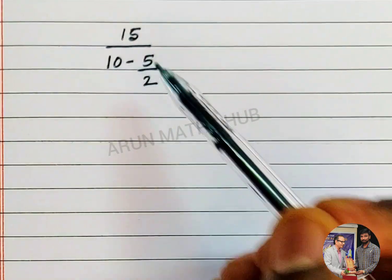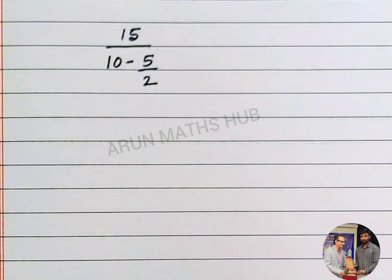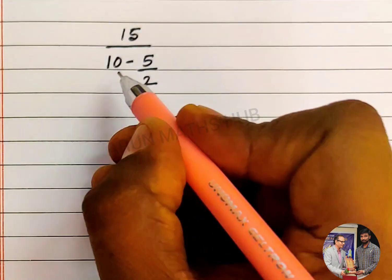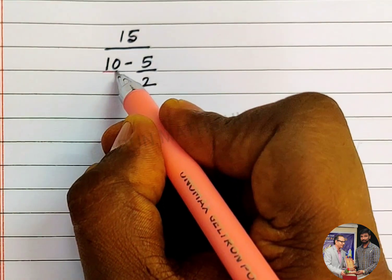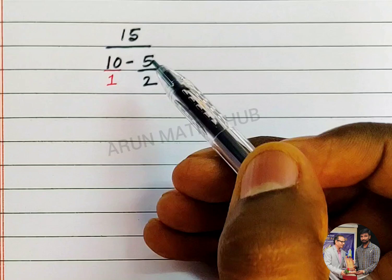15 divided by 10 minus 5 by 2. Now, what I will do now, I will write 10 as 10 by 1. 10, I am writing it as 10 by 1.